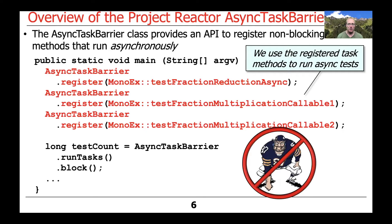The AsyncTaskBarrier class provides an API used to register non-blocking methods that will run asynchronously in the background. For example, we call AsyncTaskBarrier.register, passing in method references such as TestFractionReductionAsync, TestFractionMultiplicationCallable1, or TestFractionMultiplicationCallable2. All of these method references will be running asynchronously in the background in a pool of threads.